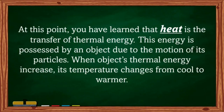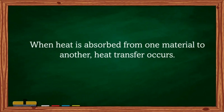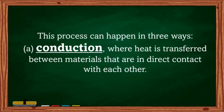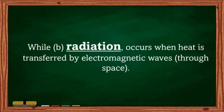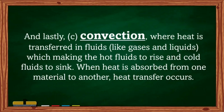At this point, you have learned that heat is the transfer of thermal energy, which is possessed by an object due to the motion of its particles. When an object's thermal energy increases, its temperature changes from cool to warmer. Heat transfer can happen in three ways: conduction, where heat is transferred between materials in direct contact; radiation, where heat is transferred by electromagnetic waves through space; and convection, where heat is transferred through fluids like gases and liquids, causing hot fluids to rise and cold fluids to sink.